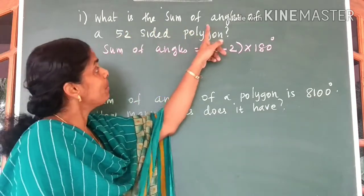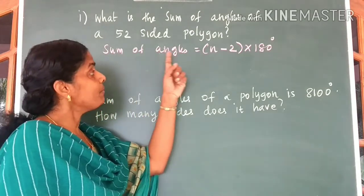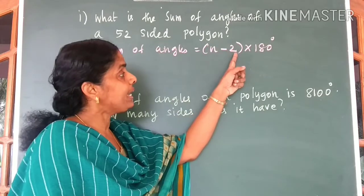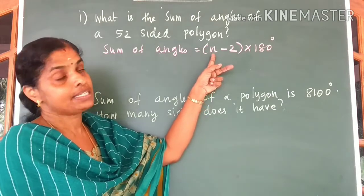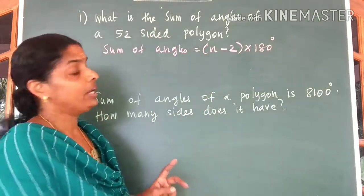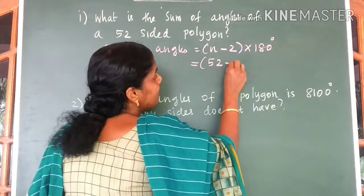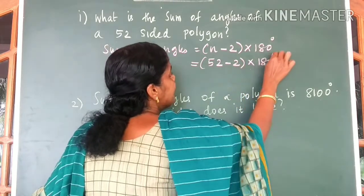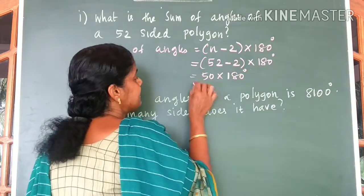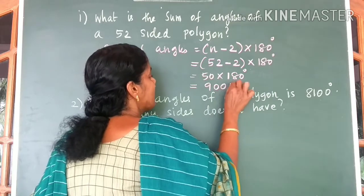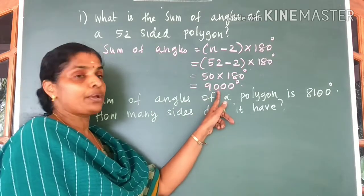Let us work out two problems. What is the sum of angles of a 52-sided polygon? The general formula is sum of angles = (n minus 2) into 180 degrees, where n is the number of sides. Since n equals 52, we get 52 minus 2 into 180 degrees, which is 50 into 180, giving you 9000 degrees.